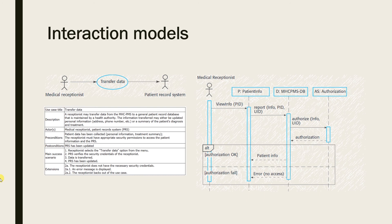The second type within interaction models covers system-to-system and component interactions, for which we use UML sequence diagrams. Sequence diagrams are used to model the interactions between actors and objects within a system. A sequence diagram shows the sequence of interactions that take place during a particular use case or use case instance. The objects and actors involved are listed along the top of the diagram with a dotted line drawn vertically from them. Interactions between objects are indicated by annotated arrows. Use cases and sequence diagrams can be applied together for interaction modeling.